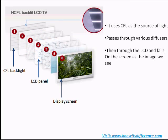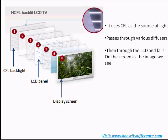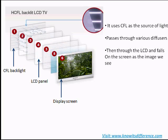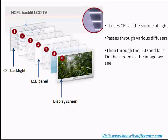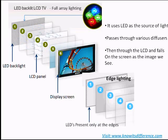The difference lies in the type of light source used. A normal LCD TV uses a CFL, or cathode fluorescent lamp, as a light source, and the light passes through various diffusers, a polarizer, an LCD panel, and finally falls on the screen as an image. Whereas in an LED TV, instead of CFL, a light-emitting diode or LED is used as the light source.